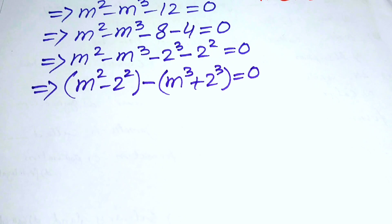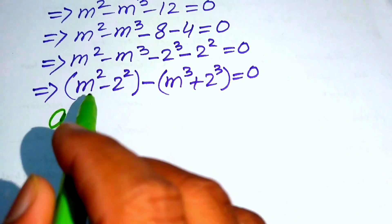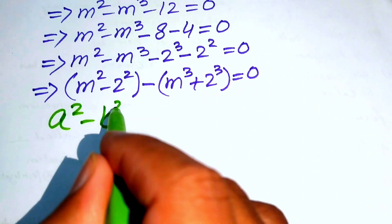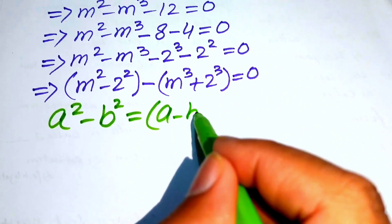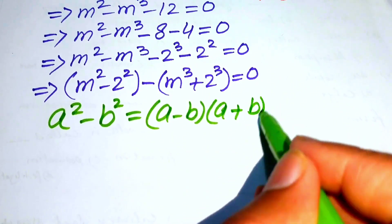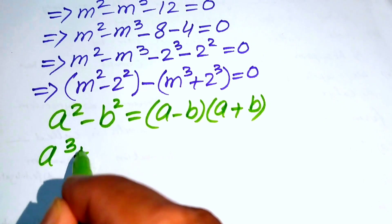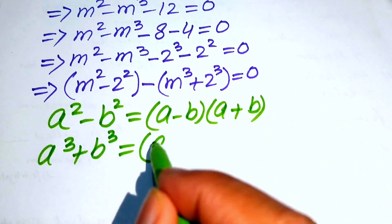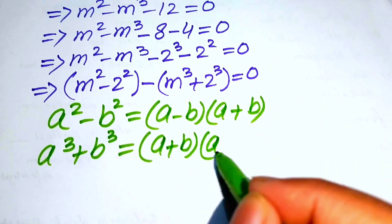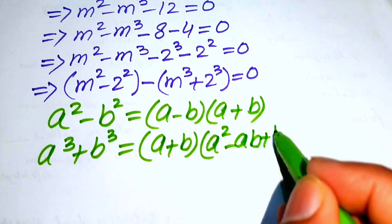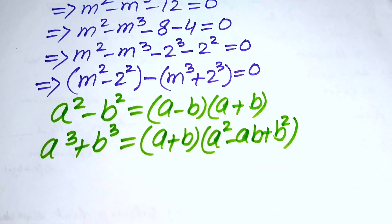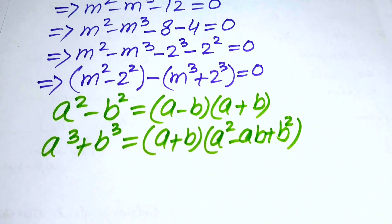We need two basic algebra formulas: the difference of squares formula, a squared minus b squared equals (a minus b)(a plus b), and the sum of cubes formula, a cubed plus b cubed equals (a plus b)(a squared minus ab plus b squared).